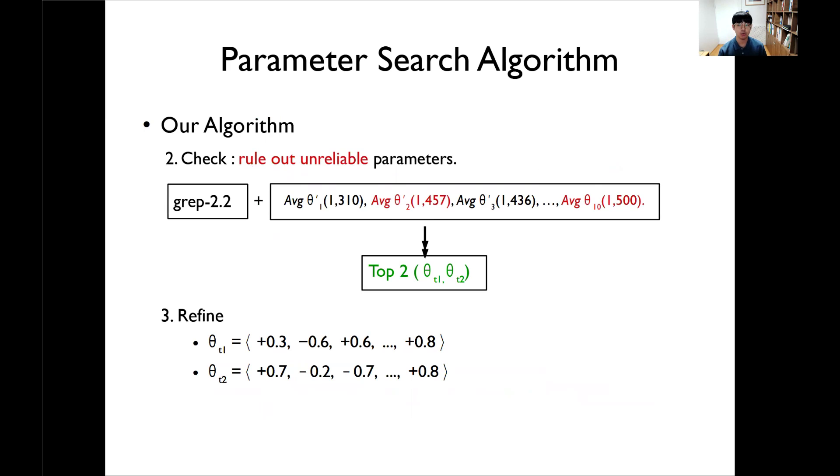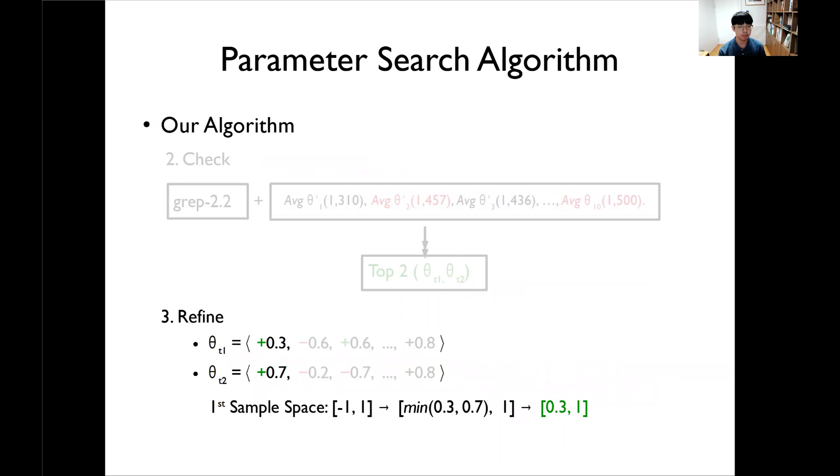And in the second stage, check, we choose the top two parameters having the best average performance over 10 trials. This step is needed to rule out unreliable parameters and find some stable ones. And in the final stage, we refine 40 sample spaces based on the top two parameter values. Suppose that these top two parameter values are like that. Look at the first sample space. These parameters are all positive, so we positively refine the sample space. As a result, the first sample space is changed as the real number between 0.3 and 1. And if the value in the sample value is used as positive 1 in both top two values, it describes this branch feature that should be more explored.